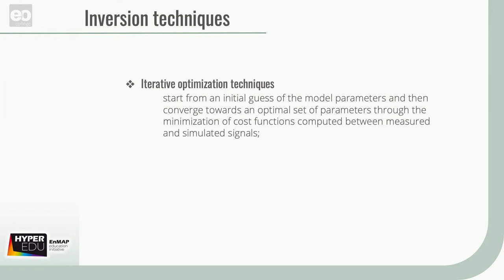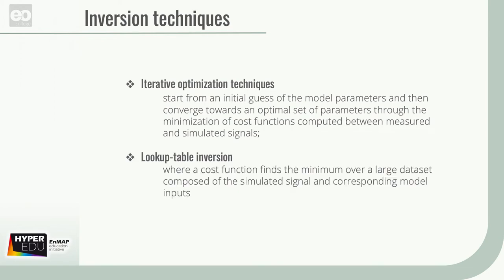We also differentiate inversion techniques. Iterative optimization techniques, where we start from an initial guess of the model parameters and then converge towards an optimal set of parameters through the minimization of cost functions computed between measured and simulated signals. Look-up table inversion, where a cost function finds the minimum over a large dataset composed of the simulated signal and the corresponding model inputs, and hybrid inversion.